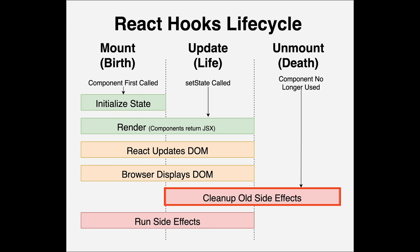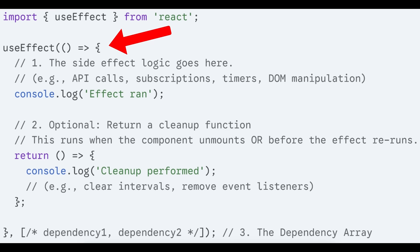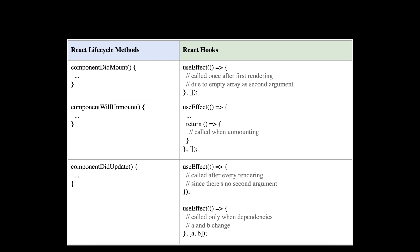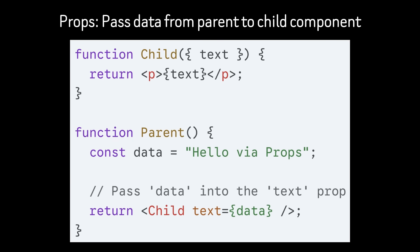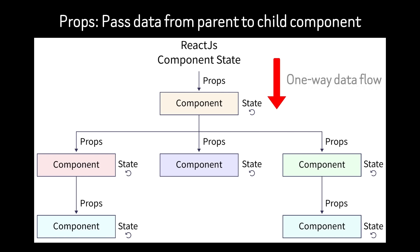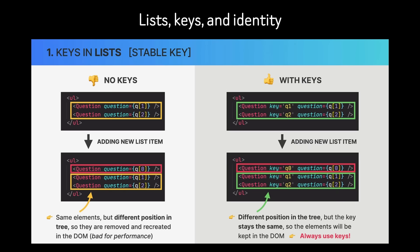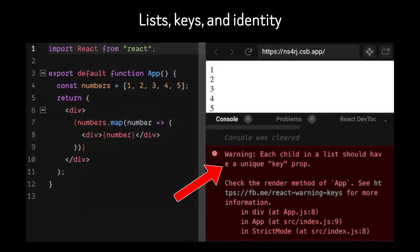Any interaction with the external world belongs in an effect. Effects run after React commits changes to the DOM, allowing components to synchronize with systems React does not control, such as network APIs, browser APIs, or subscriptions. The dependency array defines when the effect should rerun. Conceptually, effects let React maintain a clean separation between pure rendering and impure side effects, which is essential for correctness and concurrency. Props are how components receive input from their parent. Props are immutable for a given render — a component cannot modify its props and cannot directly change a parent's state. This enforces one-way data flow, making data movement explicit and predictable. When state needs to be shared, it is lifted to the nearest common ancestor. When rendering lists, React must track which element corresponds to which piece of data across renders. Keys are not about performance alone — they define identity. Without stable keys, React cannot reliably preserve component state or apply minimal updates.